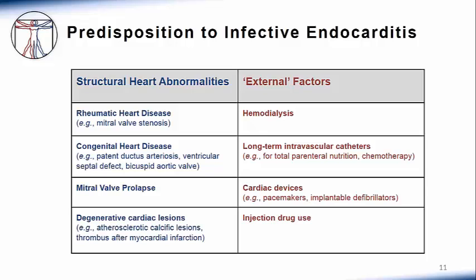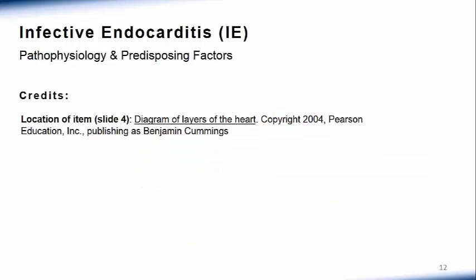External conditions predispose to infective endocarditis by providing a means for transient bacteremia. These include hemodialysis, long-term intravascular catheters, cardiac pacemakers, and intravenous drug use.